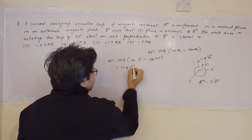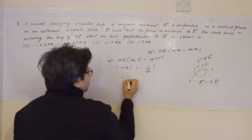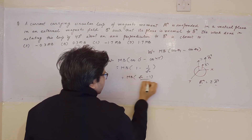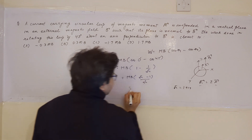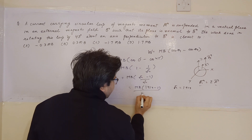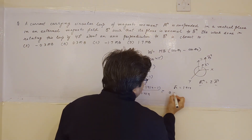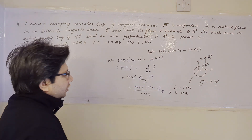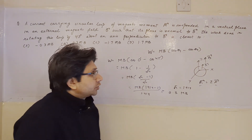Substituting into the formula: W = MB(cos 0° − cos 45°) = MB(1 − 1/√2) = MB × (√2 − 1)/√2. Since √2 ≈ 1.414, this gives MB × (1.414 − 1)/1.414 ≈ 0.3 MB. This is a positive value, so option B is the correct answer.